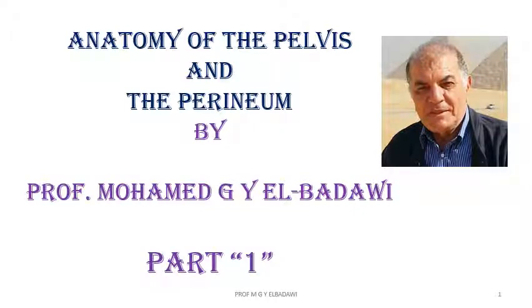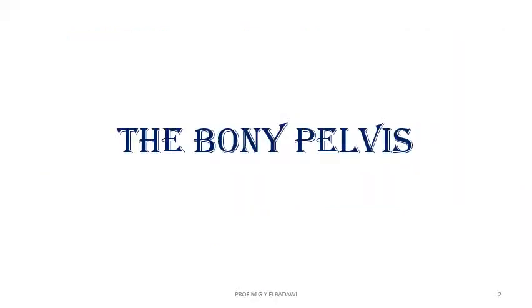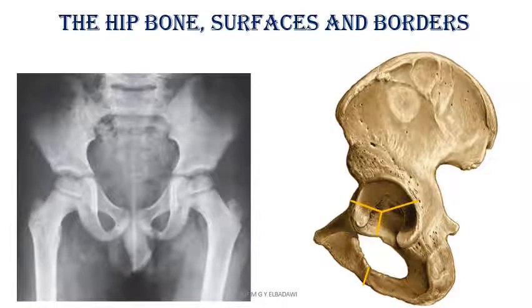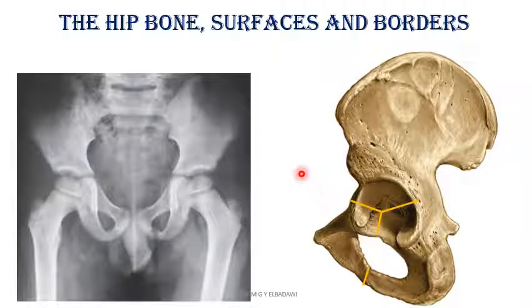We are going to start a series on the anatomy of the pelvis and the perineum, and this is the first part. We'll start by the bony pelvis, by the hip bone, and summarize the important features which you have to know while studying the pelvis.